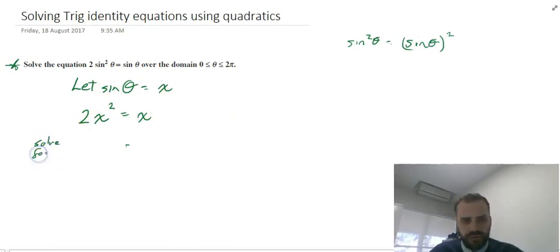Solve for x. I'm going to do that by moving everything to one side: 2x squared minus x equals 0. I'm going to factorize this. x is a common factor here. x times 2x minus 1 equals 0.